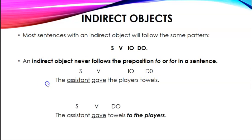Another example. The assistant gave towels to the players. In this sentence, to the players is a prepositional phrase. We would cross it off. Because players cannot be the indirect object.